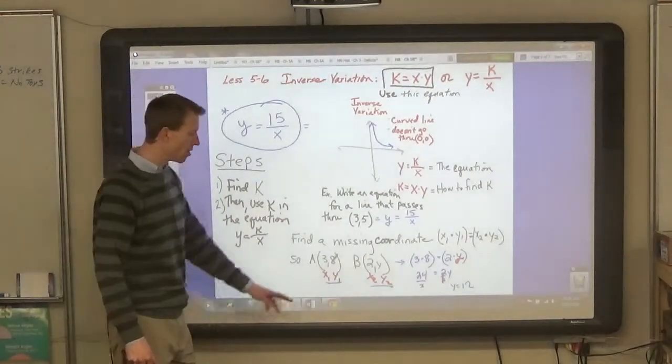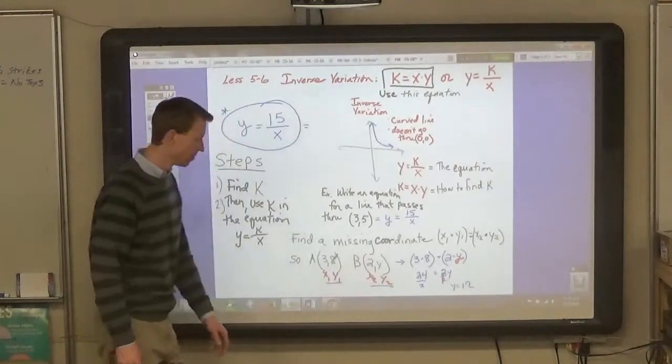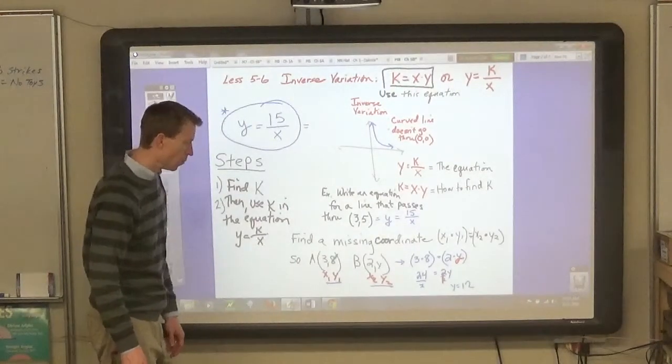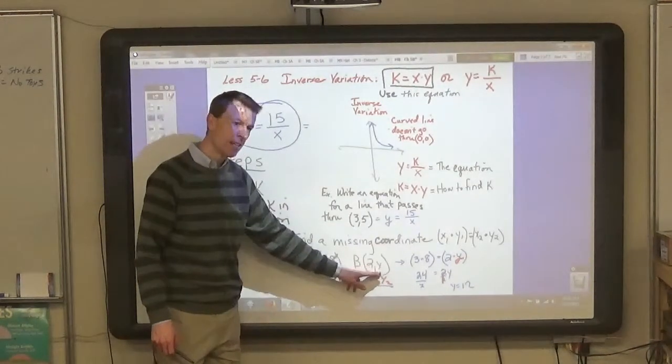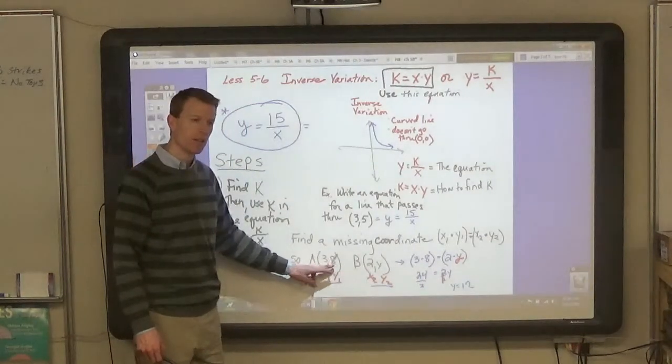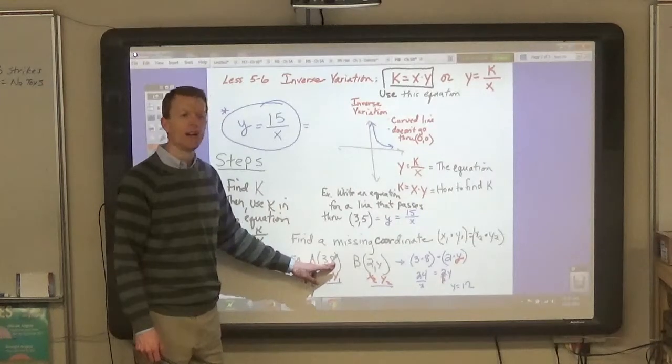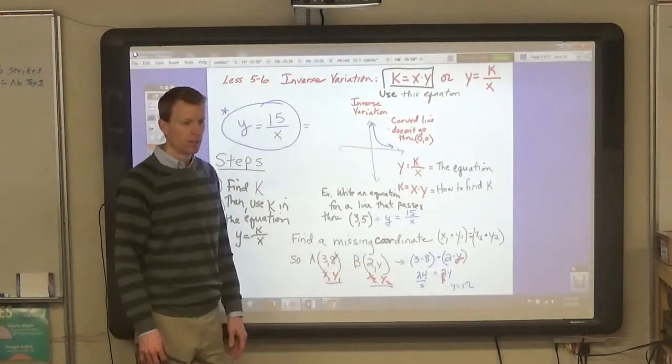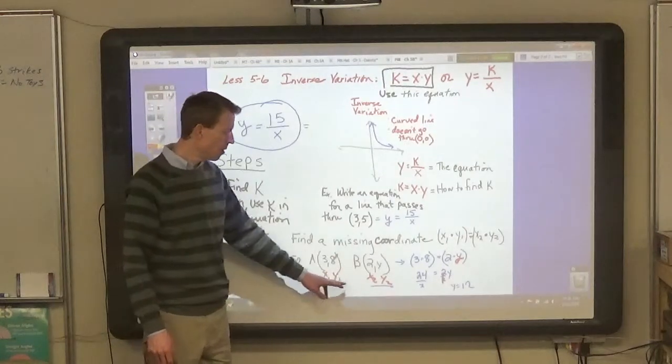Because they equal the same number. But then, why isn't y 8? Why is it a different number? Because 2 times 8 is what? 16. But it has to equal what? 24. That's why. It has to equal the same number.